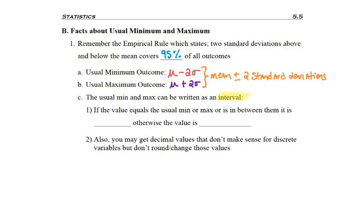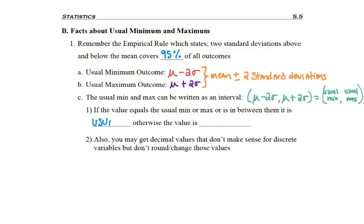It can also be written in interval format: mu minus two sigma up to mu plus two sigma. In words, that's your usual min to your usual max. When we talk about intervals, we always write the smaller number comma the bigger number, understanding it's everything in between. If a value is exactly equal to the min or max, or somewhere in between, we refer to it as a usual or common value.